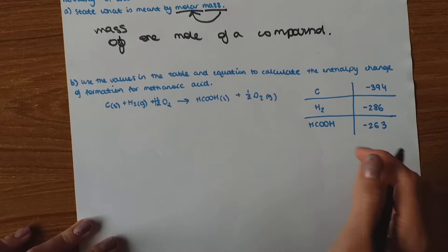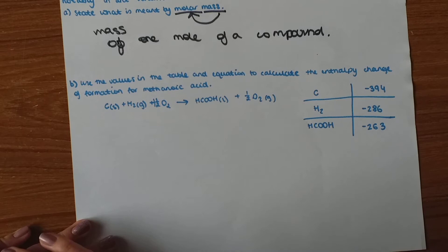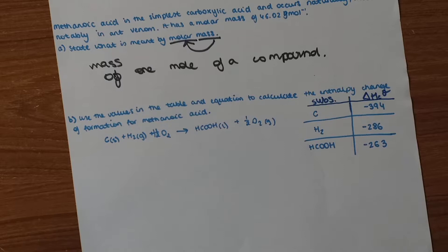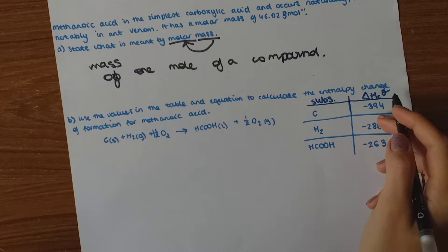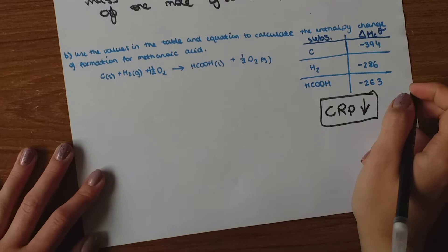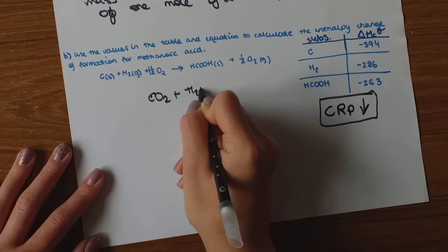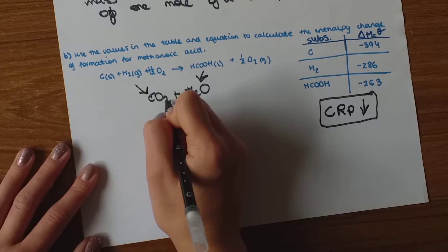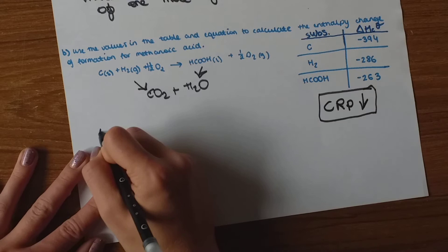Part B says use the values in the table, which is right here, and the equation, which is right here, to calculate the enthalpy change of formation for methanoic acid. So we've got the enthalpy changes of combustion. So that's what we're using. So it's CRP, arrow going down. So all you've got to do is put carbon dioxide plus water, because these are the two products that are formed from combustion. So one carbon, two hydrogens, two, three oxygens, and three oxygens. So it's all balanced.